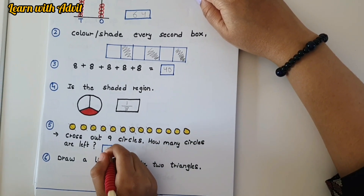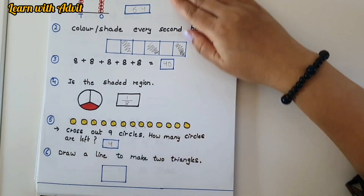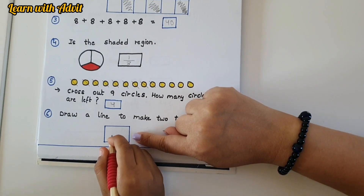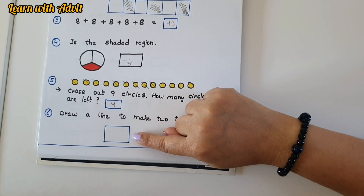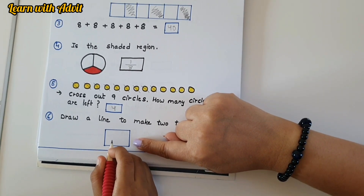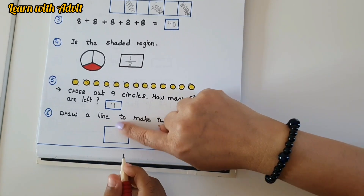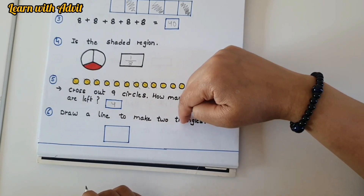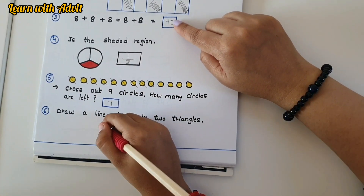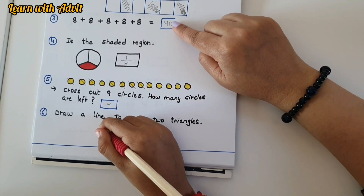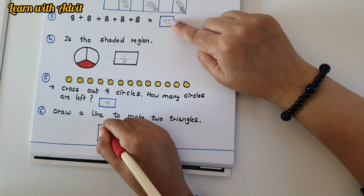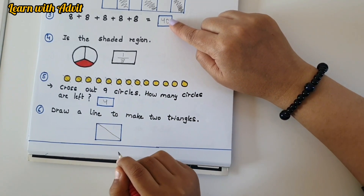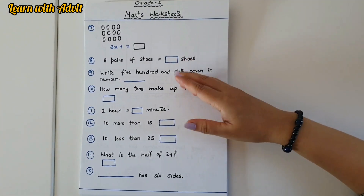Write the answer — four. This shape is not a square, it's a rectangle because two sides are longer. Draw a line to make two triangles — a diagonal line can make two triangles. Very good!